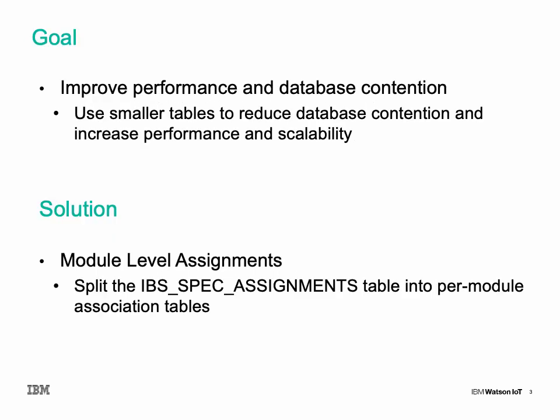So what's the goal? To improve performance and lessen database contention. One way to do that is to use smaller tables than the massive IBS Spec Assignments table. The solution was to implement module level assignments — splitting that table into per-module association tables. So if your TriRiga installation has a hundred different modules, you'll have a hundred different tables managing those associations, which should yield better performance than the older single-table approach.